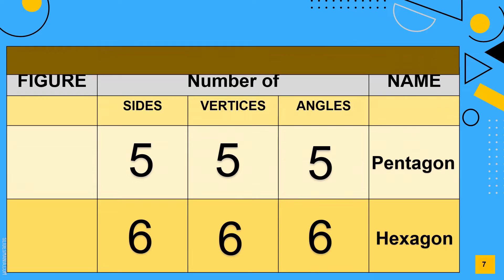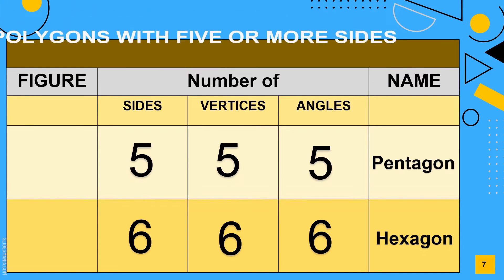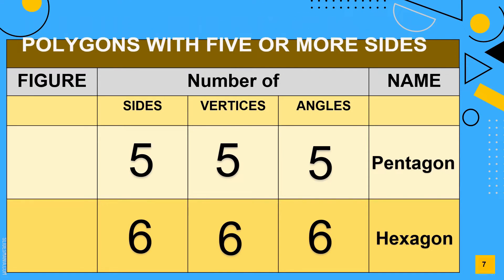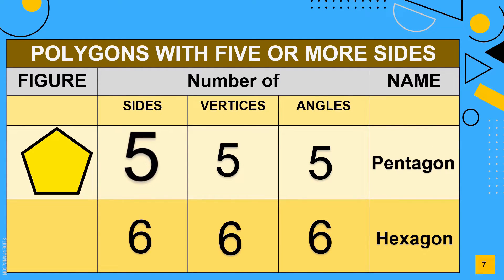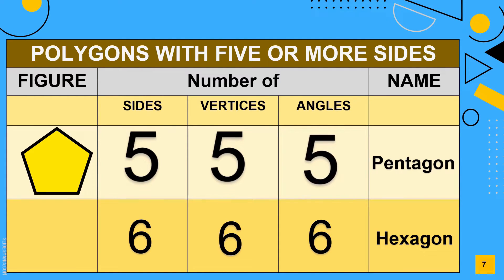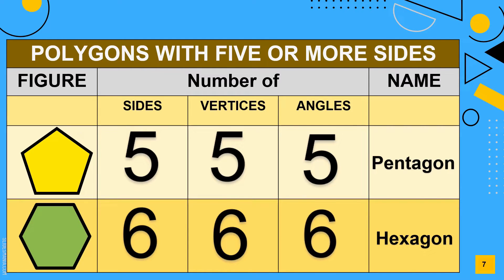Now let's refer to the chart and study the different kinds of polygons with five or more sides. A pentagon has 5 sides, 5 vertices, and 5 angles. A hexagon has 6 sides, 6 vertices, and 6 angles.